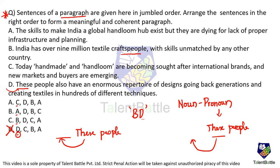B talks about craftsmen — that is, the people — and D talks about 'these people,' so BD must be a pair. Only option C contains BD, so option C is my answer. Someone might argue that 'they' in another sentence also refers to people, but if you observe, 'they are dying for lack of proper infrastructure' — here 'they' refers to skills, not people. The only term that refers to 'these people' is the craftsmen. So the noun-pronoun strategy gives us option C.